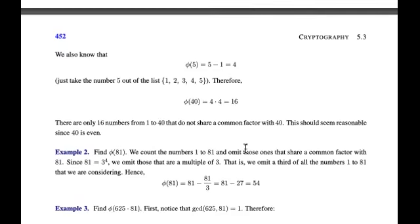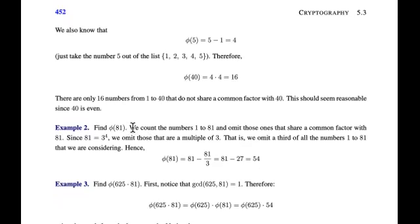Let's look at another one: φ(81). We count all numbers from 1 to 81 and omit those that share a common factor with 81. Since 81 = 3⁴, a power of the prime 3, this is equivalent to taking away everything that's a multiple of 3. That's one third of the numbers. So we take 81 minus one third of 81: 81 minus 27 = 54. So φ(81) = 54.